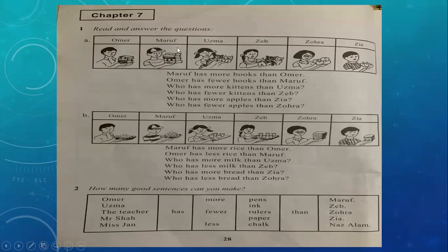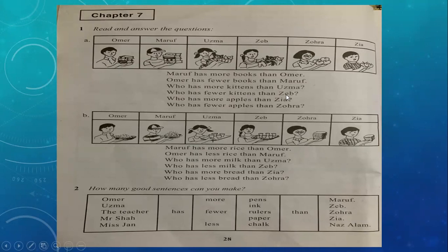There are pictures of boys and girls: Umar, Maruf, Usman, Zeb, Zohra, and Zia. Now let's read the sentences. Maruf has more books than Umar. Umar has fewer books than Maruf. Umar has four books and Maruf has five. Maruf has more books. Here is Uzma with two kittens and Zeb with three. Who has more kittens than Uzma? The answer: Zeb has more kittens than Uzma. Who has fewer kittens than Zeb? Uzma has fewer.